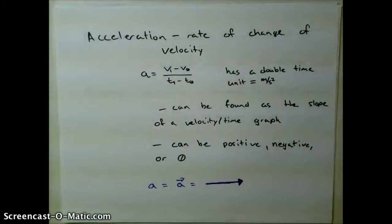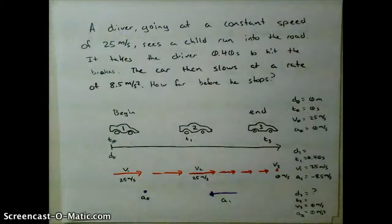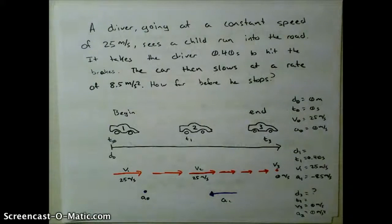So let's look at a problem using acceleration. Here we have a driver going at a constant speed of 25 meters per second. He sees a child run into the road. It takes the driver 0.4 seconds to hit the brakes. The car then slows to a rest, slows at a rate of 8.5 meters per second squared. How far before he stops?